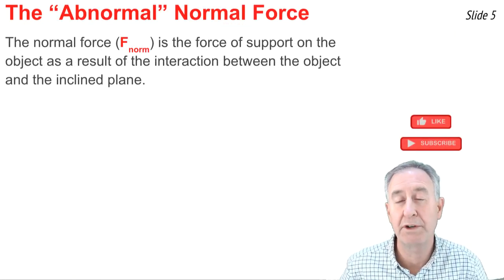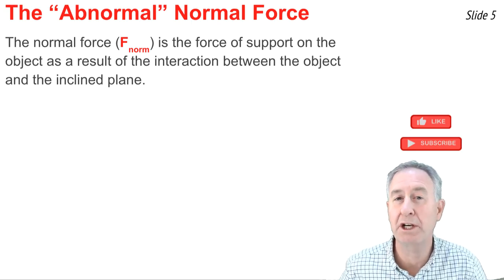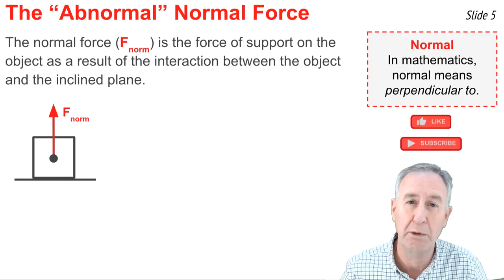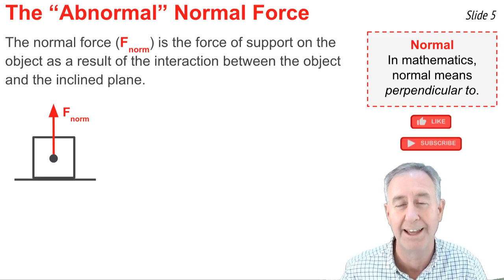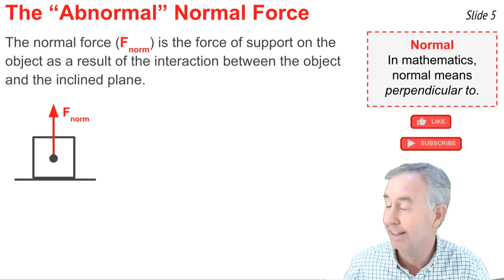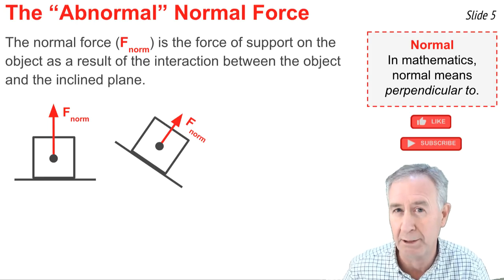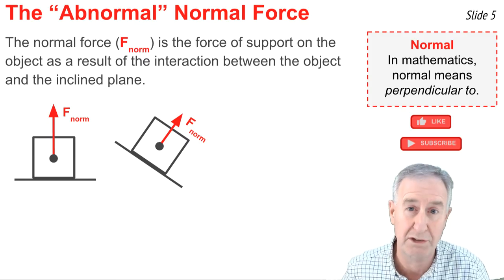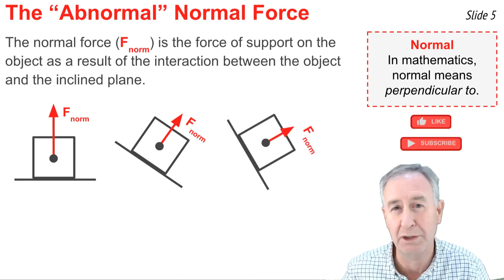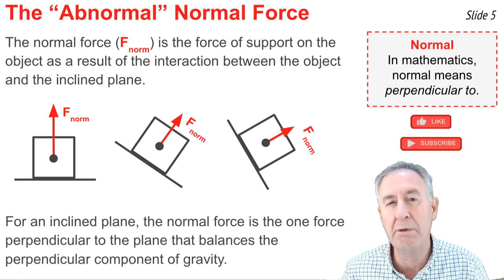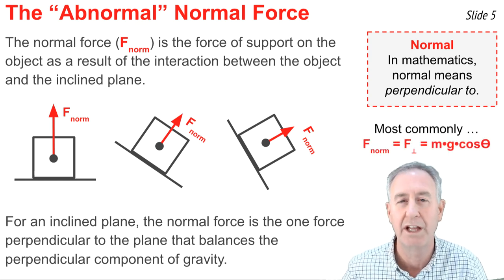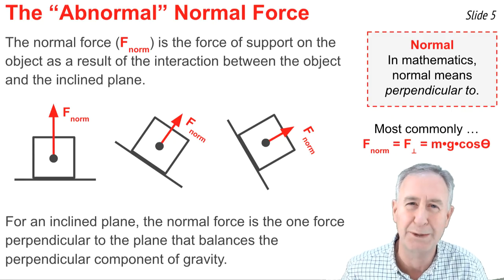The normal force is the support force that results from the interaction between an object and the plane it rests upon. In mathematics, 'normal' means perpendicular, so the normal force is always perpendicular to the surface the object presses upon. It may seem strange that on an inclined plane the normal force is no longer straight upward — but normal forces are always perpendicular to the surface, so when we tilt the plane, we also tilt the normal force. The normal force is the one force perpendicular to the plane capable of balancing the perpendicular component of gravity, so most often F-normal equals F-perpendicular, which equals mg cosine of theta.